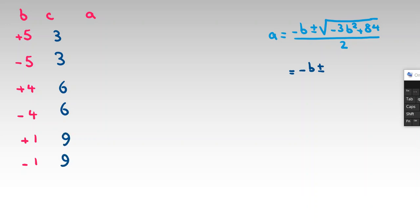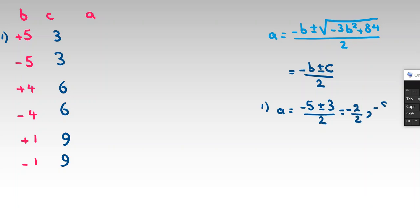Case 1: b = 5, c = 3. Then a = (negative 5 ± 3) / 2. That gives (negative 5 + 3) / 2 = negative 1, and (negative 5 minus 3) / 2 = negative 4. So a = negative 1 or negative 4.